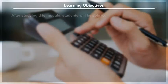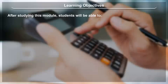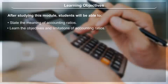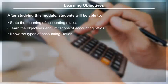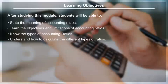Learning Objectives: After studying this module, students will be able to state the meaning of accounting ratios, learn the objectives and limitations of accounting ratios, know the types of accounting ratios, and understand how to calculate the different types of ratios.